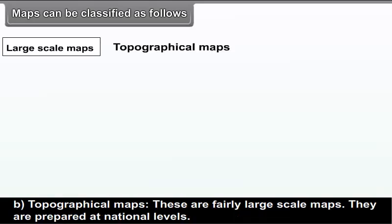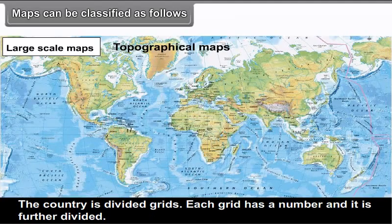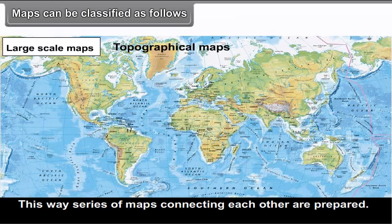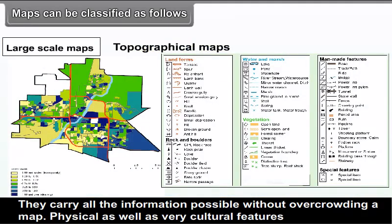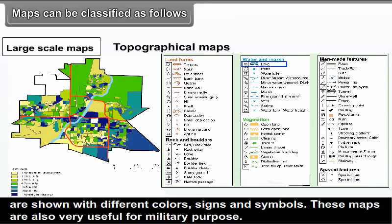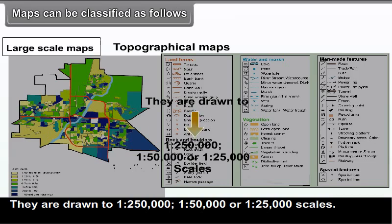Topographical maps are fairly large-scale maps prepared at the national level. The country is divided into grids, each with a number, further subdivided into a series of maps connecting each other. They carry all possible information without overcrowding. Physical as well as cultural features are shown with different colours, signs and symbols. These maps are very useful for military purposes, and are drawn to scales of 1:2,50,000, 1:50,000, or 1:25,000.